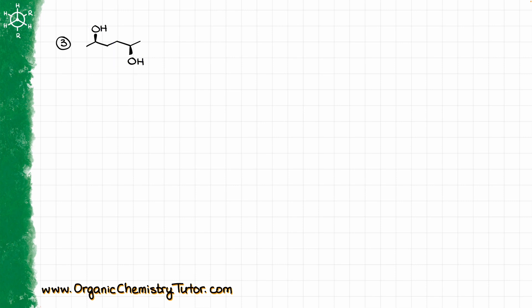What about the inversion axis? So if I draw a line over here, does this molecule have an inversion point? No, it does not have an inversion point, because as soon as we cross this point in our axis, the other side of the molecule should flip — and it didn't. So we do not have an inversion point here either.